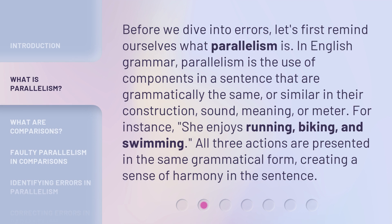Before we dive into errors, let's first remind ourselves what parallelism is. In English grammar, parallelism is the use of components in a sentence that are grammatically the same, or similar in their construction, sound, meaning, or meter. For instance, 'she enjoys running, biking, and swimming.' All three actions are presented in the same grammatical form, creating a sense of harmony in the sentence.